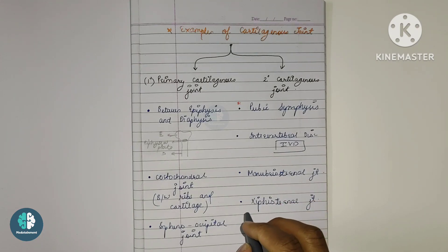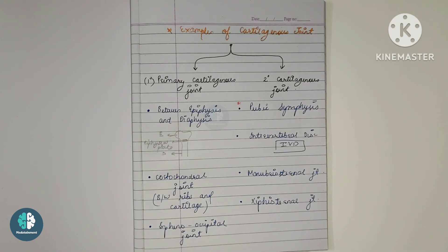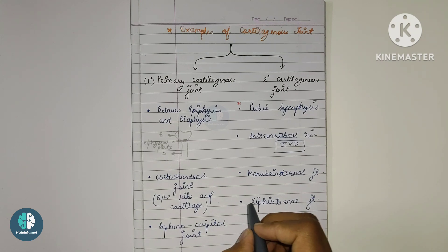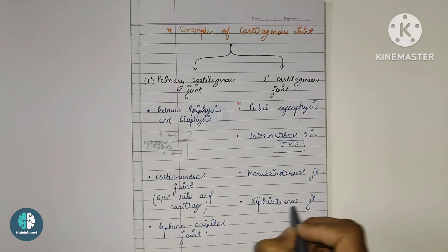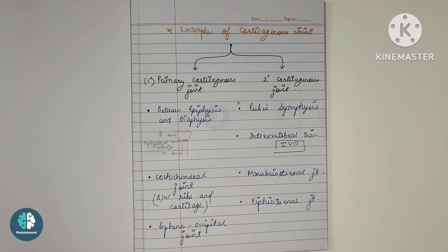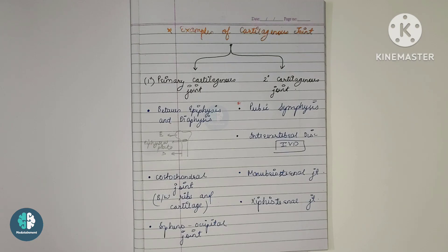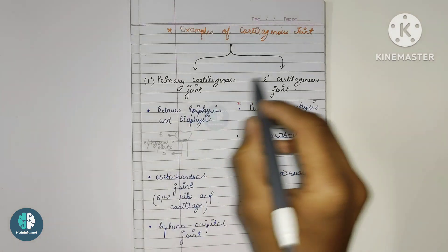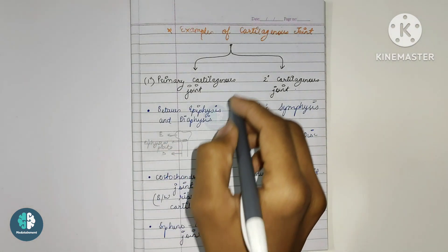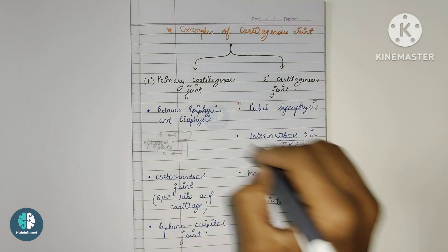Next is the xiphisternal joint, which is located between the body of the sternum and the xiphoid process, forming the xiphisternal joint, as you can see in the picture. These are the various examples for the primary as well as secondary cartilaginous joints.